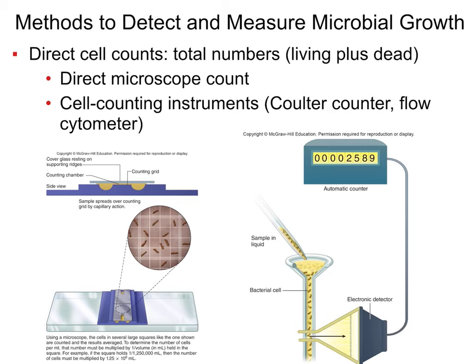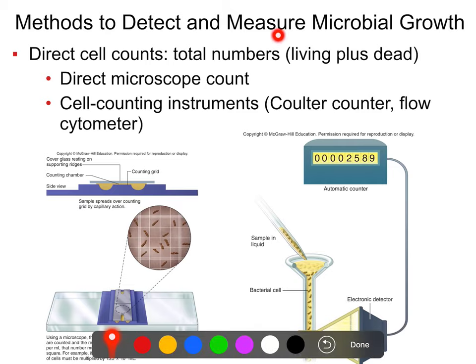The first sort of scheme that you can use to detect growth in the lab is direct measurements — direct cell counts — which you can do using a microscope or you can do using a cell counting instrument.